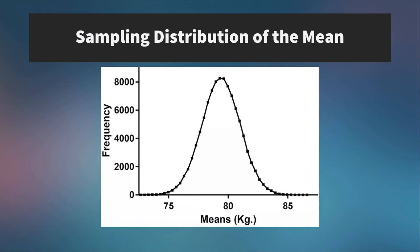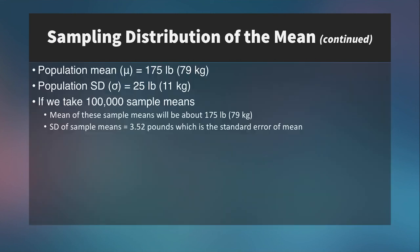If we take the mean of all those theoretical sample means, it would equal the population mean. If you take the standard deviation of all those means, it's what we call the standard error of the mean. The population mean is 175 and population standard deviation is 25. If we took 100,000 sample means of n=50 from this population, the mean of all those means would be 175, and the standard deviation of the sample means — the standard error of the mean — would be 3.52 pounds.